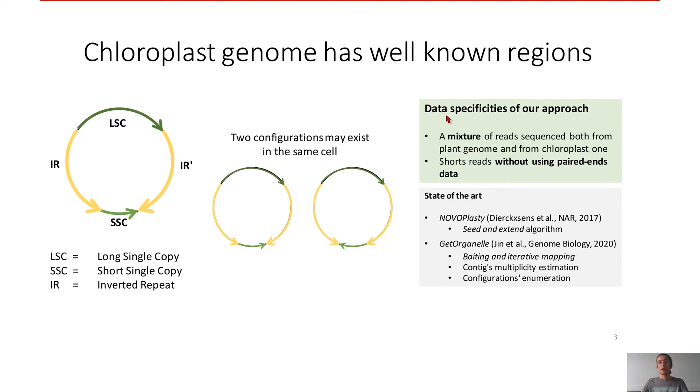What are the specificities of our data? We have a mixture of reads sequenced both from progenome and from chloroplast. We used short reads without using paired-end data, at the opposite of the state-of-the-art like Novoplasty and GetOrganel. These very recent works show the interest of the community for chloroplast genome assembly.